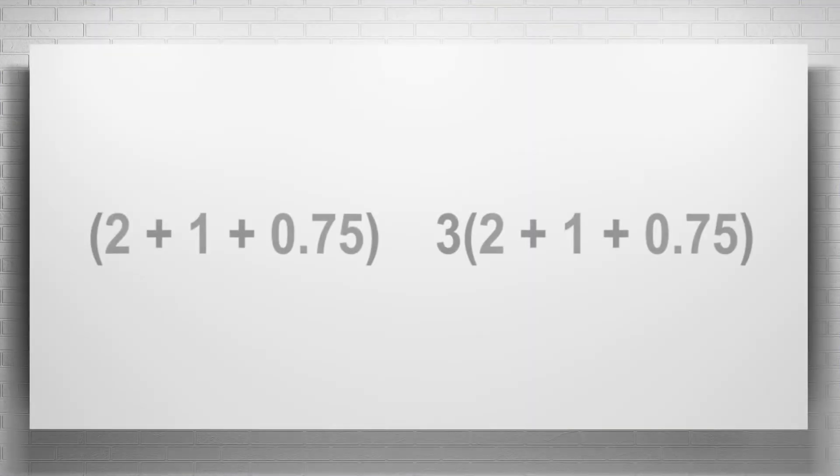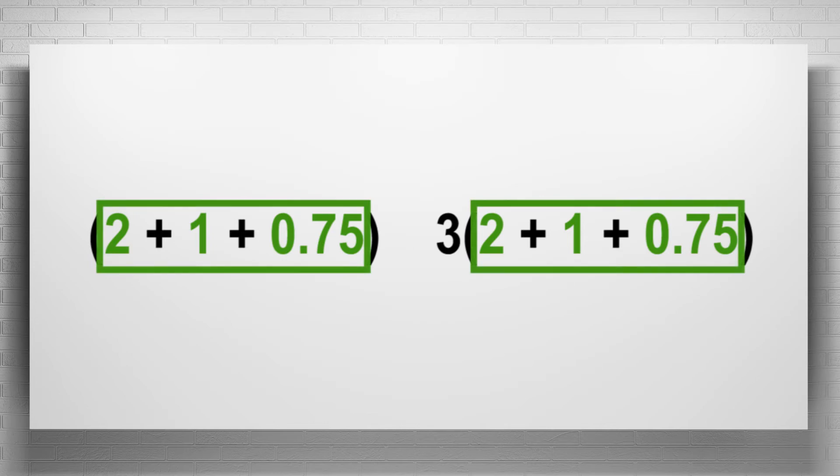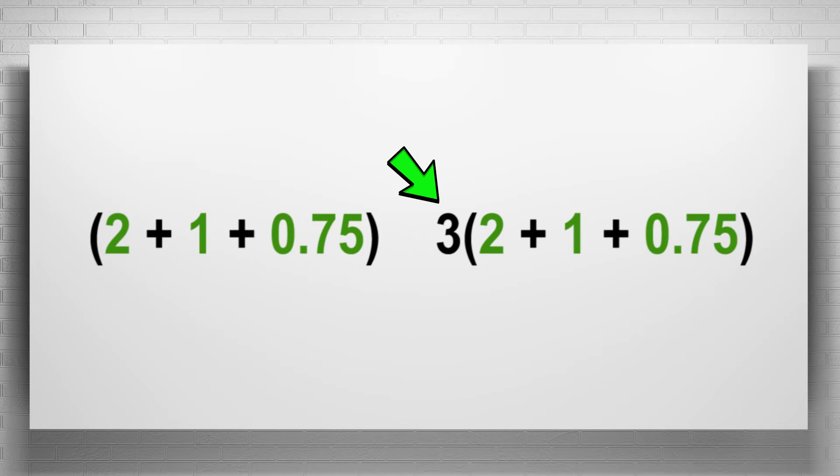For example, let's look at these two expressions. Note how each expression contains a common component, 2 added to 1 added to 75 hundredths. Understanding the shared portion of each expression, we can see the expression on the right is 3 times the value of the expression on the left.